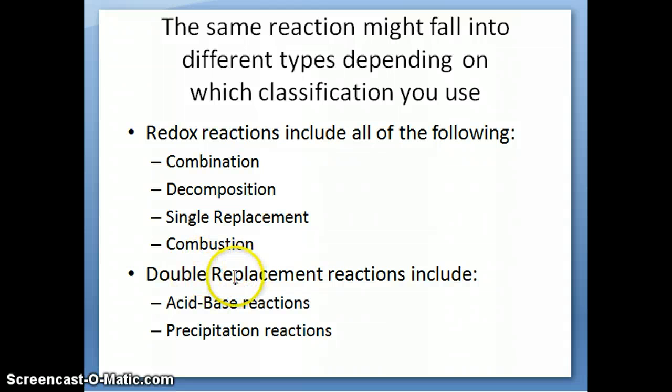These are also double replacement, but double replacement is kind of a general term. So sometimes people like to call them specifically acid-base, if it's an acid reacting with a base. Or precipitation, if you actually get a solid form as a result of the double replacement reaction. So in the next video, we'll go into detail into each one of these. Basically, we'll talk about precipitation reaction, acid-base, and then several examples of redox reactions.